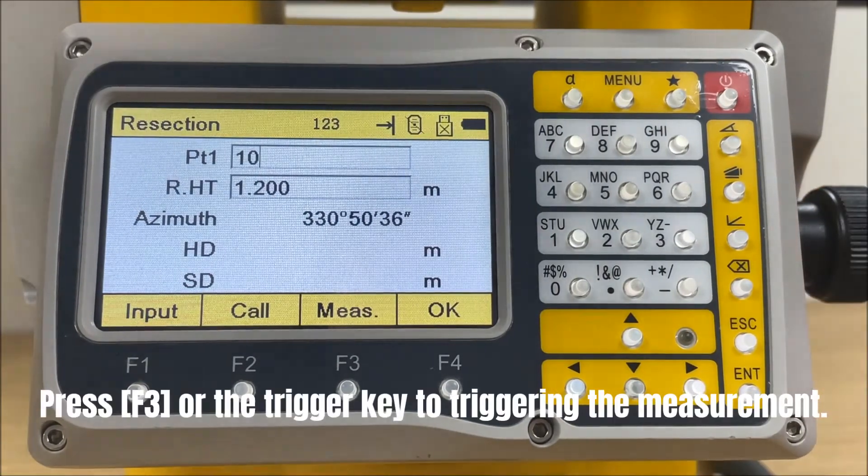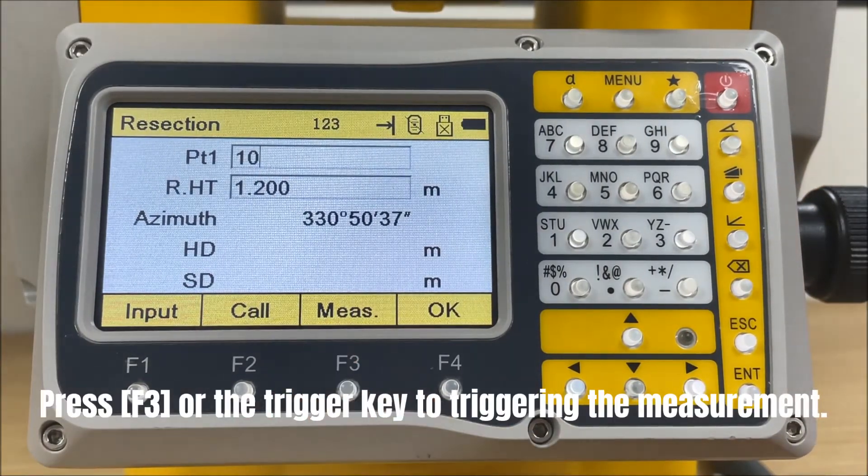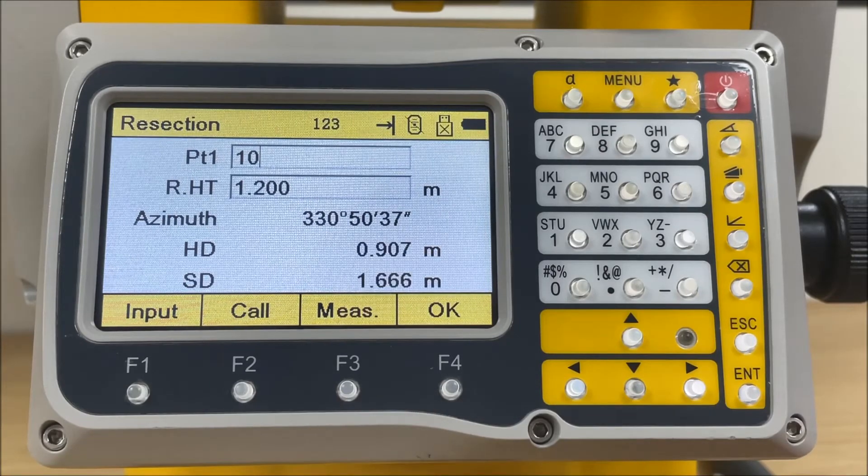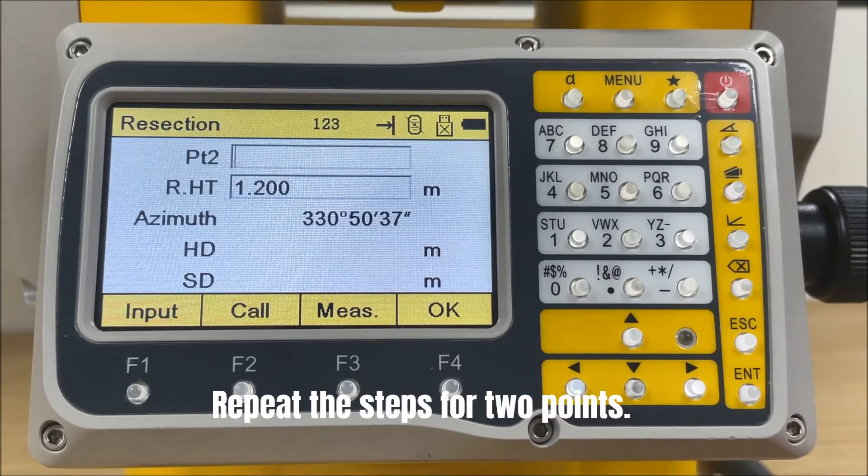Press F3 or the trigger key to trigger the measurement. Repeat the steps for 2 points.